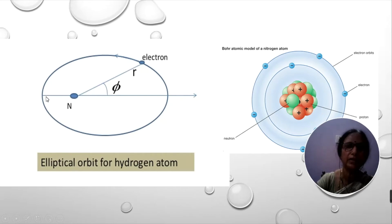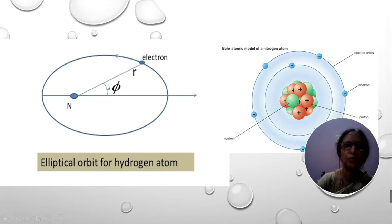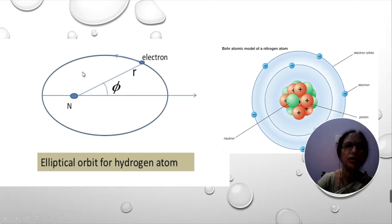Once the elliptical orbit is considered, the velocity of the electron will be different at different parts of the path. In order to account for this, Sommerfeld considered the relativistic variation of mass of the electron with velocity. So these are the two postulates: the first postulate is that the electron revolves in an elliptical orbit with the nucleus at one of the foci; the second postulate is that as the electron moves in an elliptical orbit, its velocity considerably changes at different parts of the orbit, so it follows a relativistic variation of mass with velocity. This is why his theory is called the relativistic atom model.